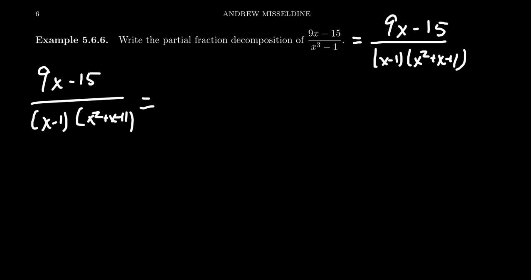Your template would look like A over x minus 1, and then your second denominator would be x squared plus x plus 1. But what's the numerator supposed to be? These are supposed to be proper fractions. If my denominator is quadratic, then your numerator could be linear, actually. So we have to have something like Bx plus C.